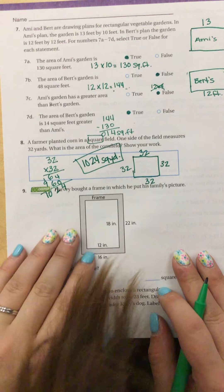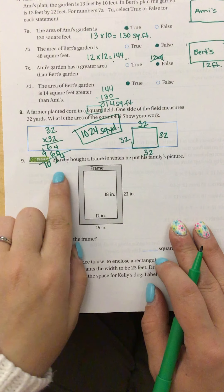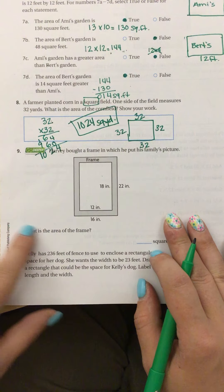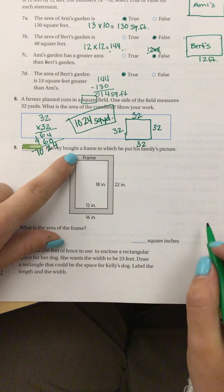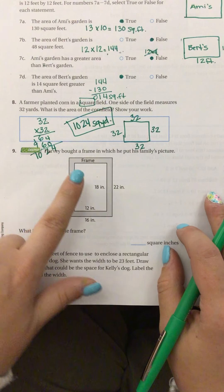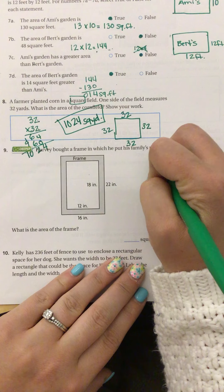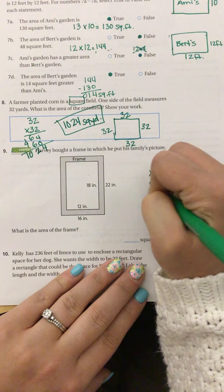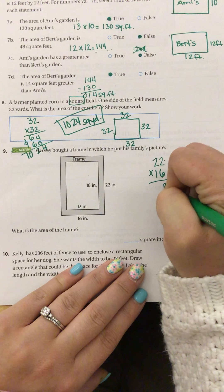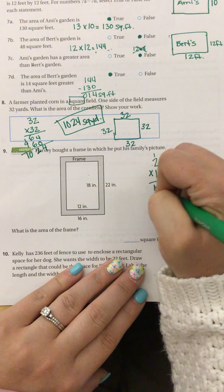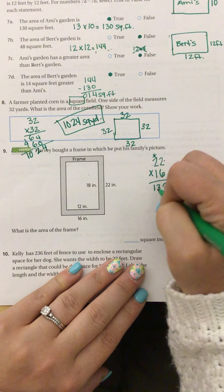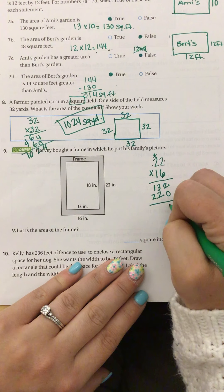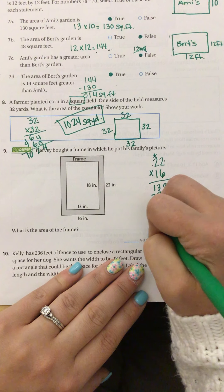All right, next question. Harvey bought a frame in which he put his family picture. So here's the frame and the picture. What is the area of the frame? Which means we don't want the area of the entire thing, we want just the gray part. So we're going to first find the area of the entire square, the bigger area, which is 22 times 16. 6 times 2 is 12, 6 times 2 is 12 plus 1 is 13. Add my 0. 2 times 1 is 2, 1 times 2 is 2. Add those together, and I get 352.